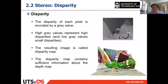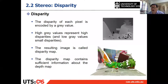The disparity map contains sufficient information about the depth image. On the top right is the disparity map, and on the bottom right is the point cloud recovered from that disparity map. That's disparity and disparity maps in stereo vision.